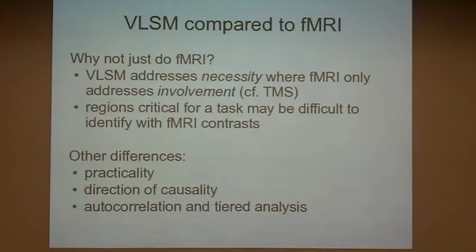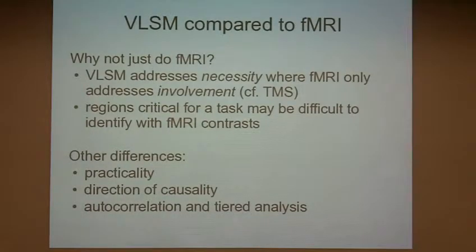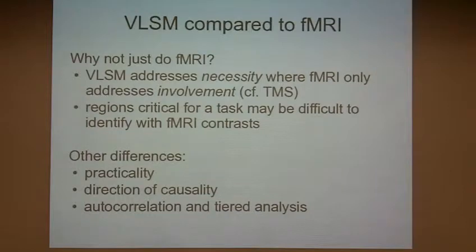Whereas people who do lesion-behavior mapping will cite whatever is relevant. I often find it helpful to compare VLSM to fMRI because fMRI is for many people more familiar. It is a real question: why not just do fMRI? fMRI seems to give us a way to look inside the box and see what's going on while cognition is happening.